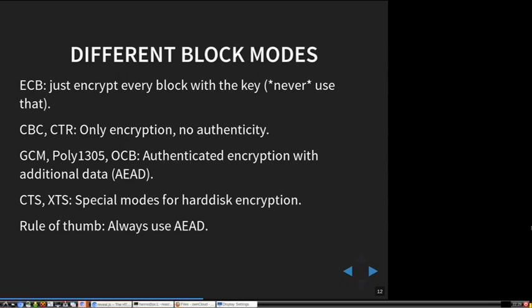There are different kinds of modes. ECB is basically just encrypting one block after another, and this is totally insecure — you should just never use it. Quite common modes are CBC and CTR. CBC is still used quite a lot in TLS, although it probably shouldn't be, and CTR is used in more modern products.